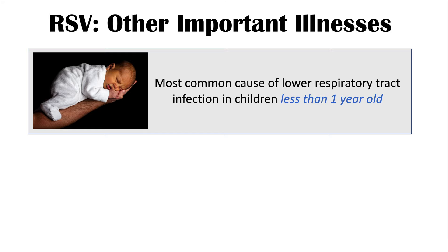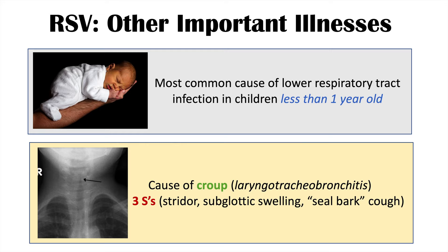There are some other important considerations regarding RSV illness. RSV is actually the most common cause of lower respiratory tract infection in children less than one year of age. So if a young child under one year has a lower respiratory tract infection, the most common cause is RSV. It is also a cause of croup, which is laryngotracheobronchitis.